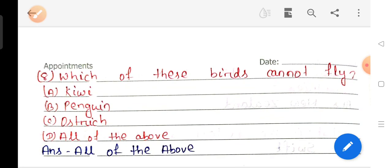Question number 8: Which of these birds cannot fly? Kiwi, penguin, ostrich, all of the above? Answer All of the above.